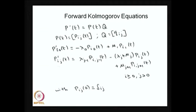For the first equation, one can discuss p-dash of i,0 — that is the probability that the system has not moved from state 0. The rate of moving out of state 0 is lambda-naught, so there is a minus lambda-naught times the probability term, and the system can come from state 1 with rate mu-1, giving mu-1 times p(i,1) of t.